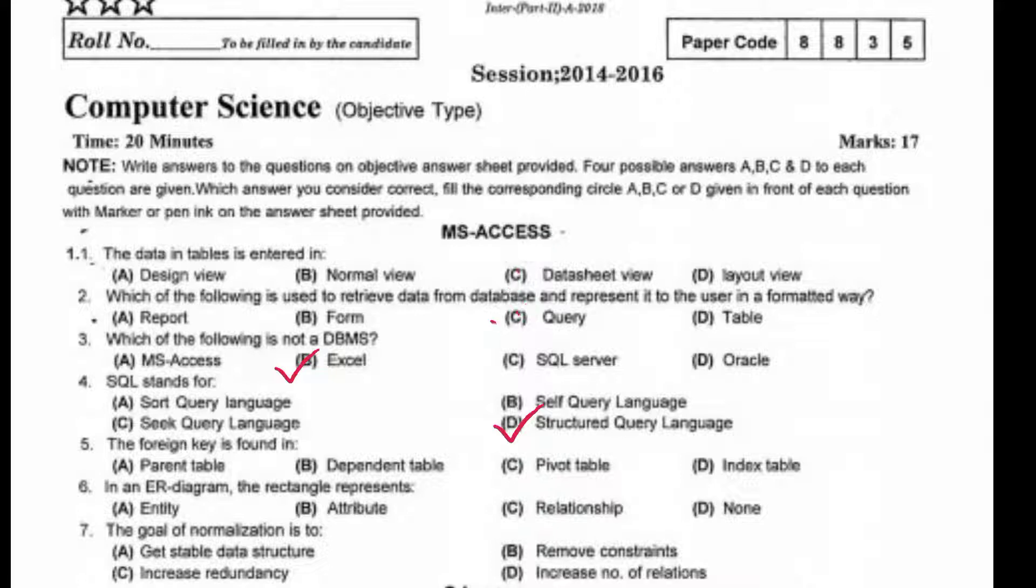The foreign key is found in dependent table. In an ER diagram, the rectangle represents entity. The goal of normalization is to get stable data structure.